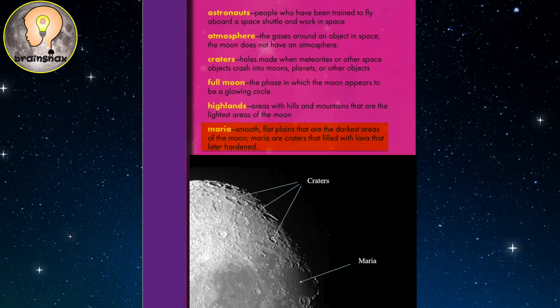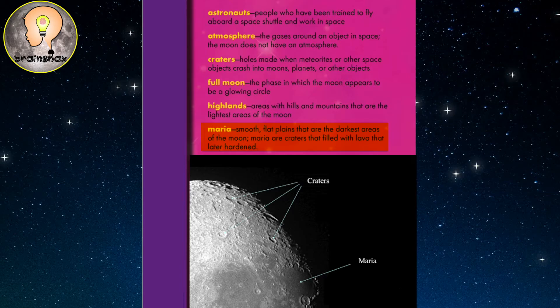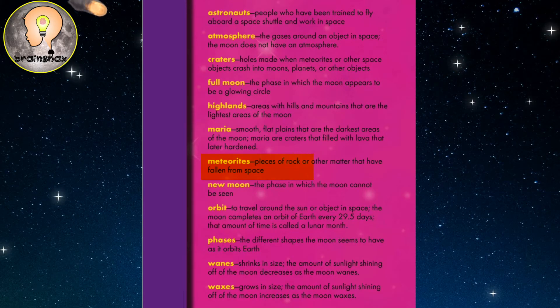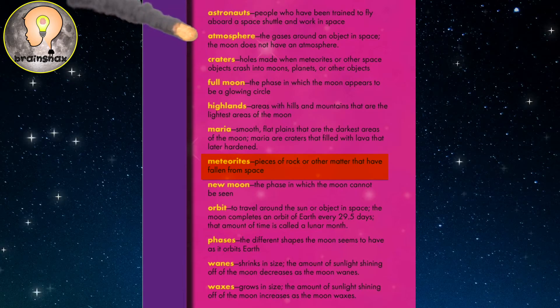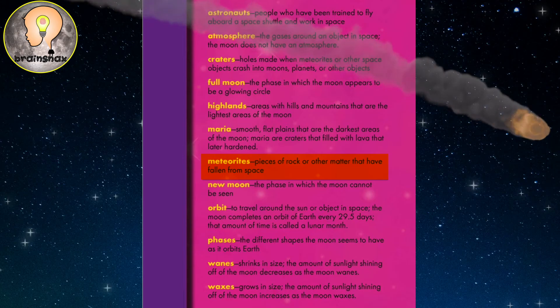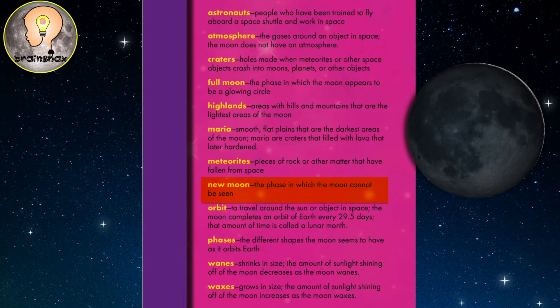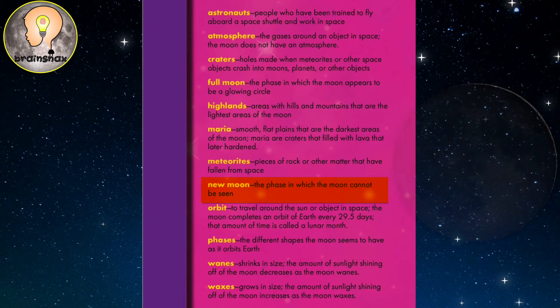Maria: smooth, flat plains that are the darkest areas of the moon. Maria are craters that filled with lava that later hardened. Meteorites: pieces of rock or other matter that have fallen from space. New moon: the phase in which the moon cannot be seen.